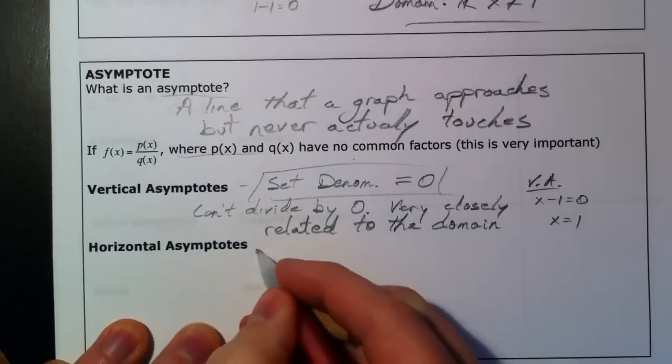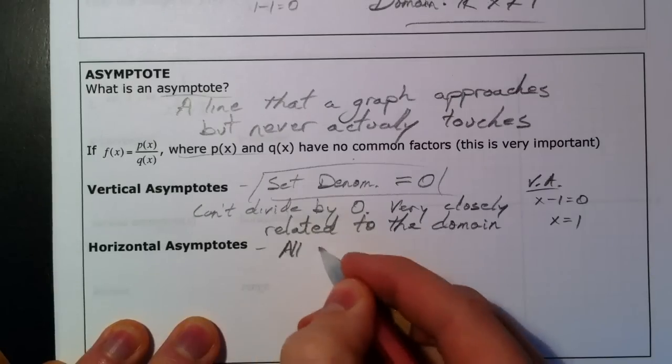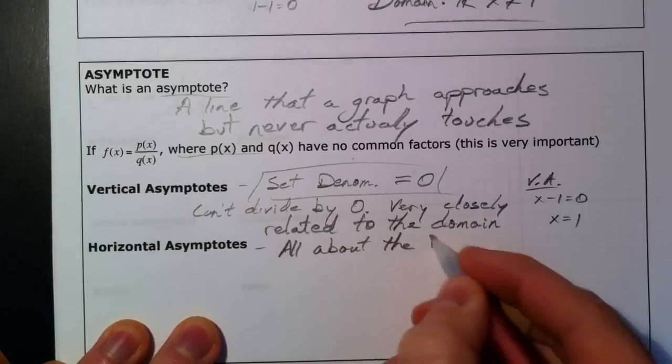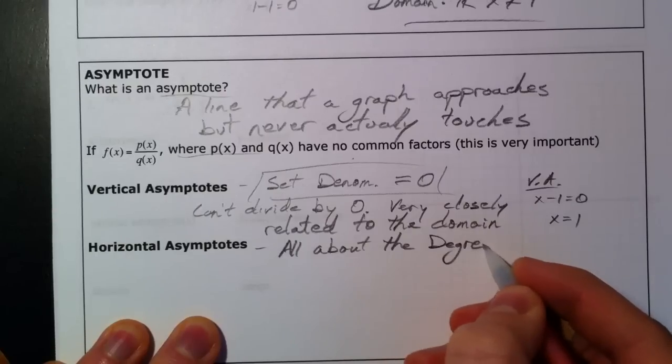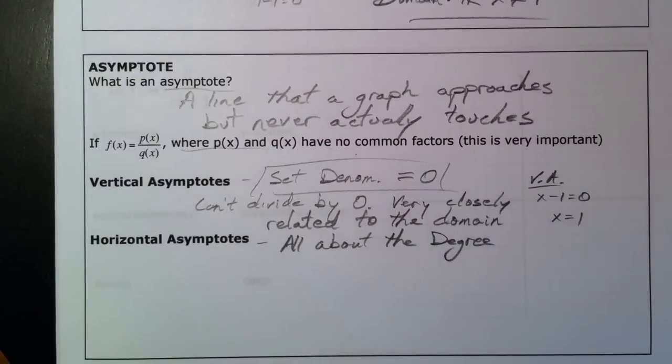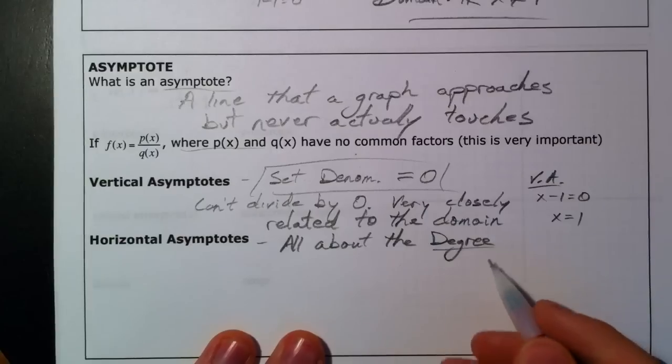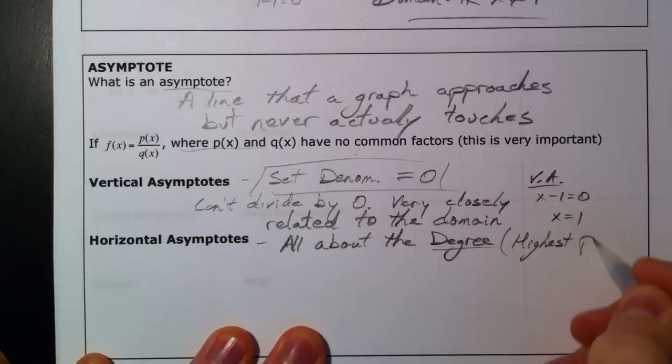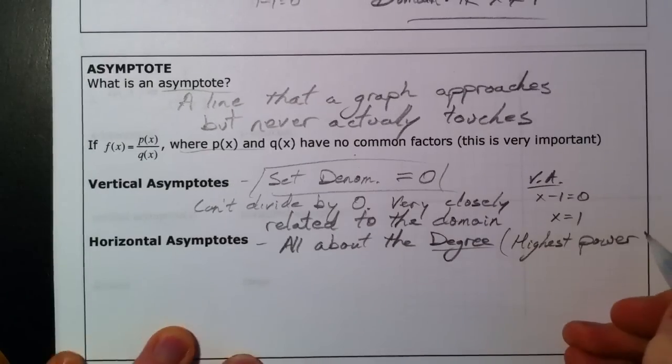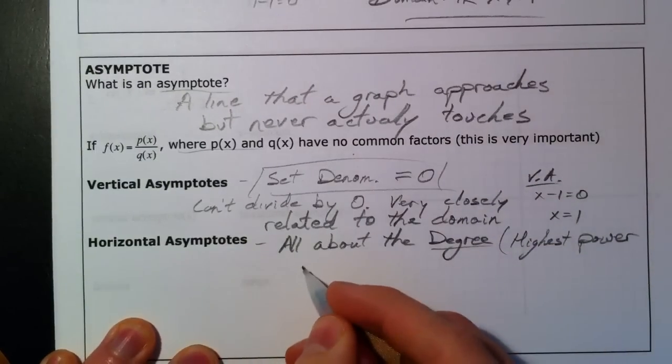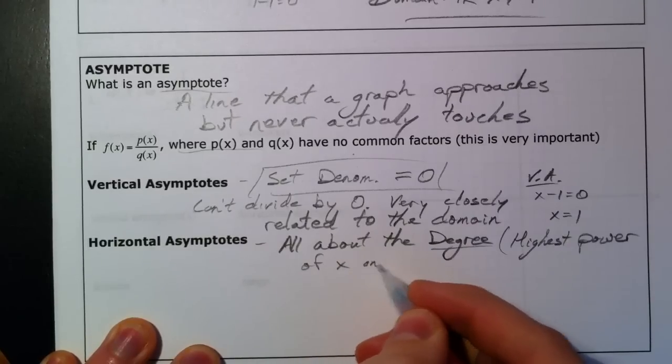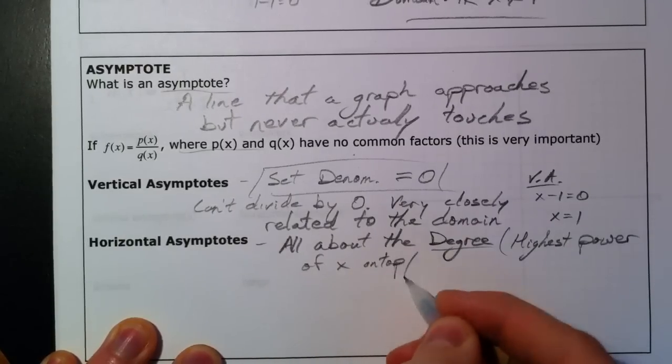Horizontal asymptotes. I'm going to write all about the degree. And so, to do horizontal asymptotes, you have to remember something from what we learned before, what degree is. The degree is that highest power of x. The highest power of x on top and on the bottom.